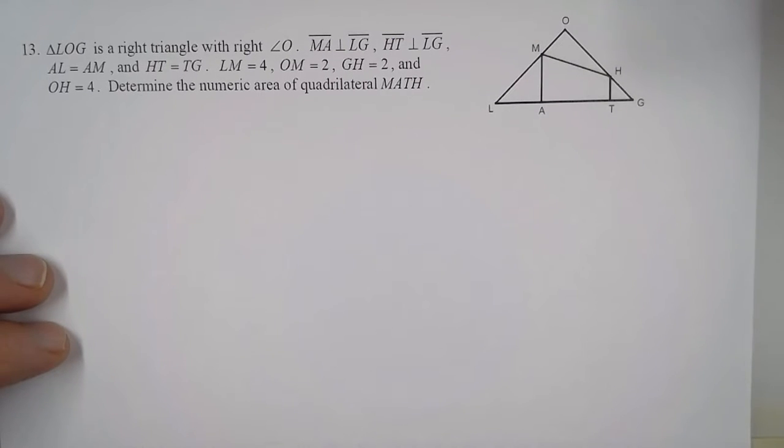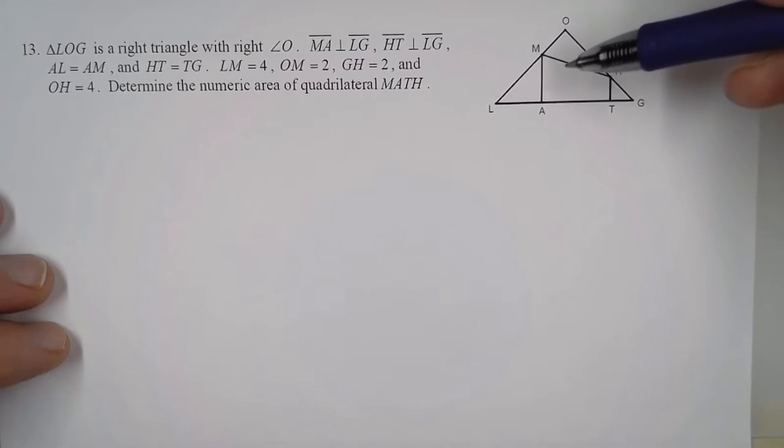L-M is 4, O-M is 2, G-H is 2, and O-H is 4. So we want to determine the numeric area of quadrilateral M-A-T-H.